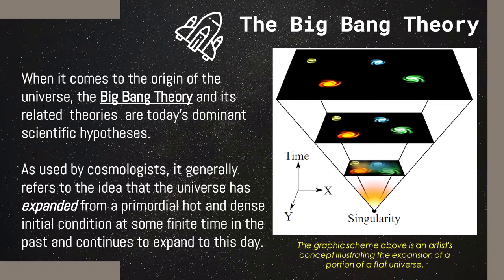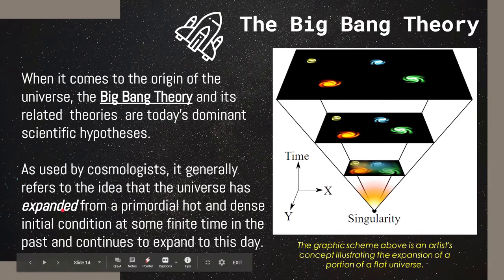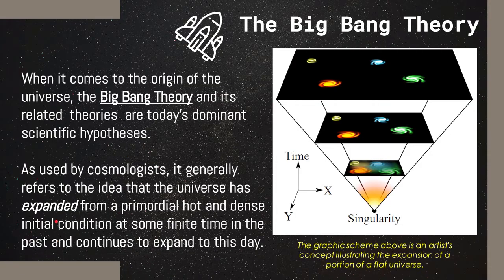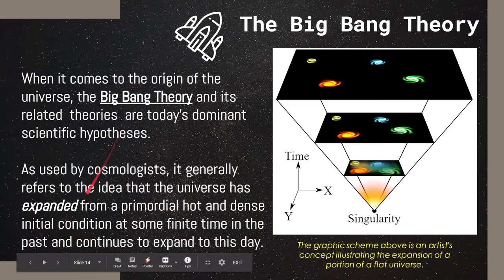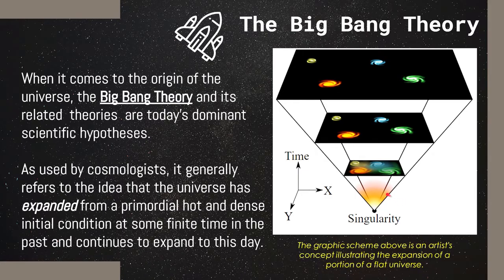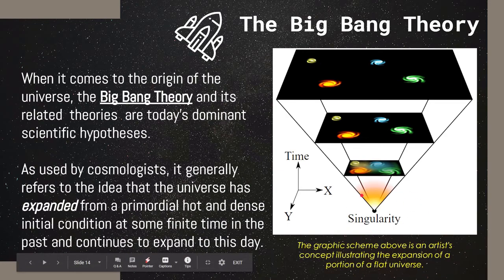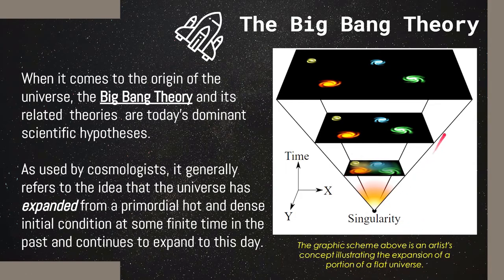When it comes to the origin of the universe, the Big Bang theory and its related theories are still the dominant scientific hypothesis we have at the moment. As used by cosmologists, it generally refers to the idea that the universe expanded. Let's correct the misconception. Nothing exploded, but something expanded from a primordial hot and dense initial condition. This is that period of singularity, the moment wherein the expansion happened. And it continues to expand up to this day. This graphic scheme shows us how that possibly happened. They say that around 13.73 billion years ago, at the moment of singularity, that hot, dense condition expanded and still continues to expand up to this moment, up to today.